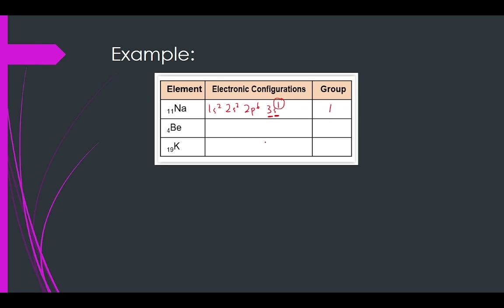What about beryllium? Beryllium: 1s2, 2s2. The outermost shell is n=2, and there are 2 electrons in that outermost shell. So beryllium is in group 2.